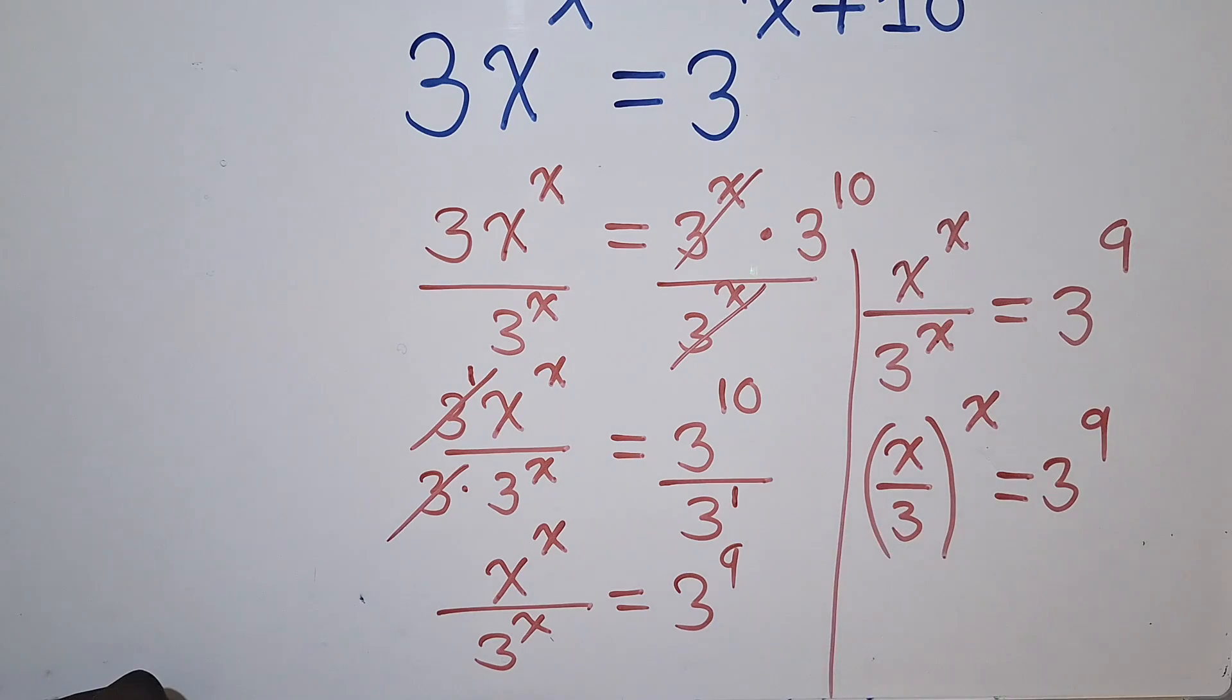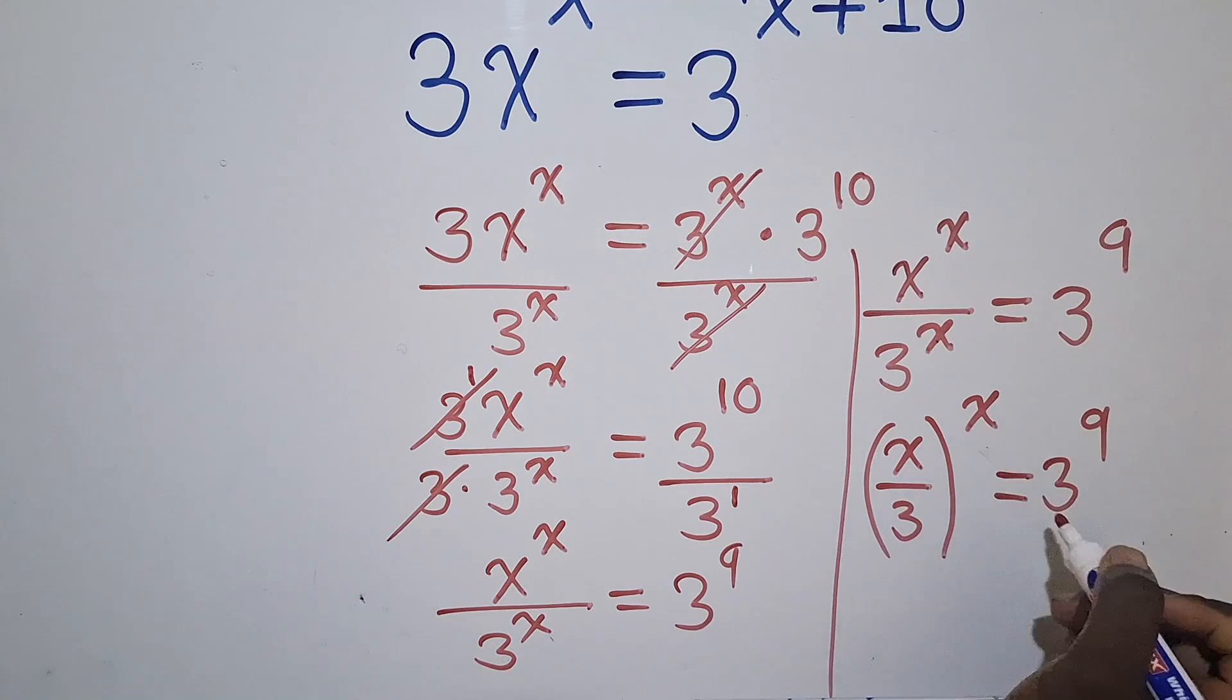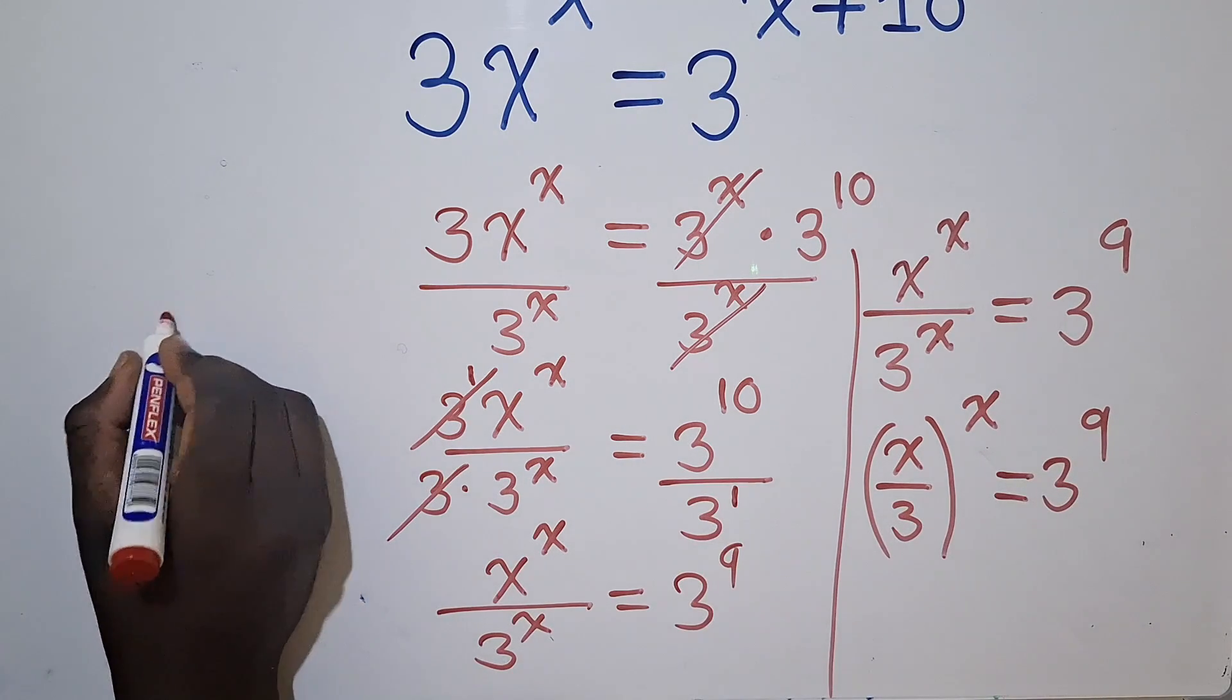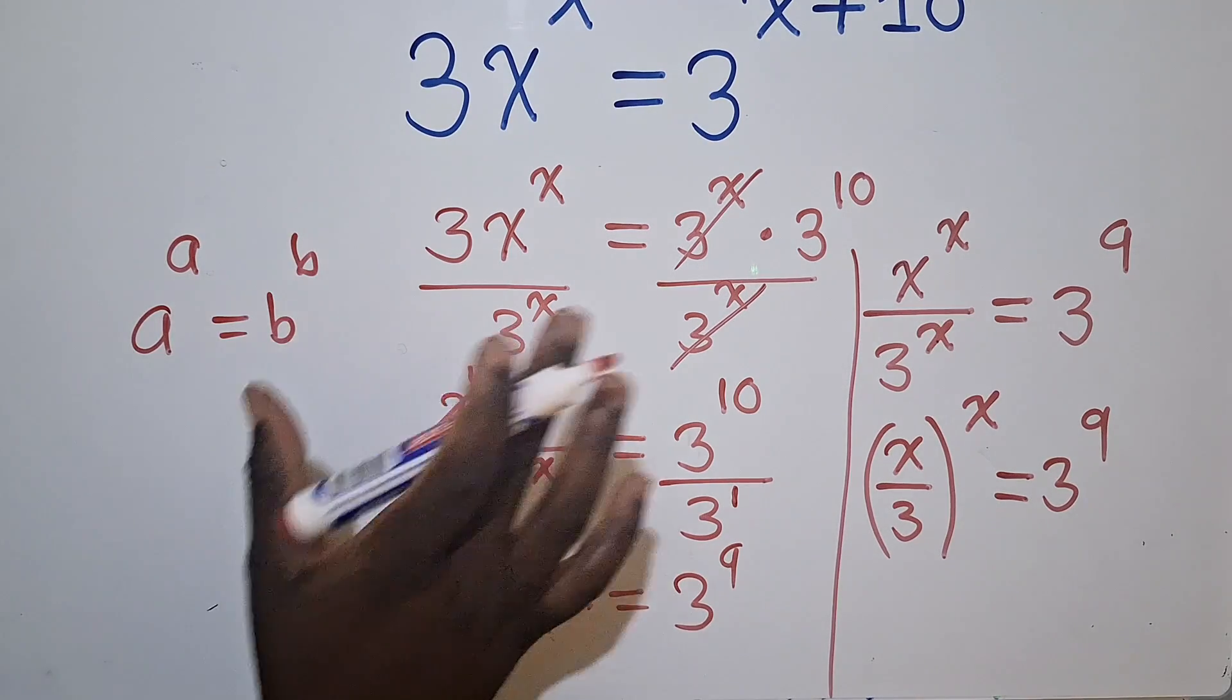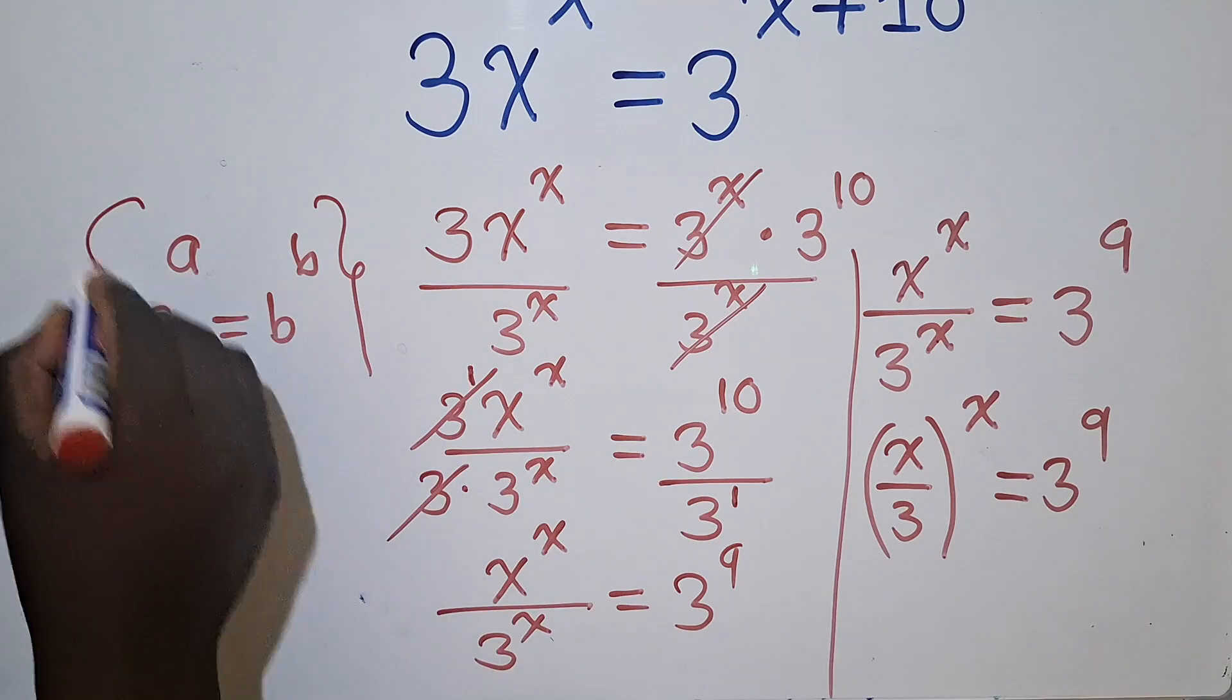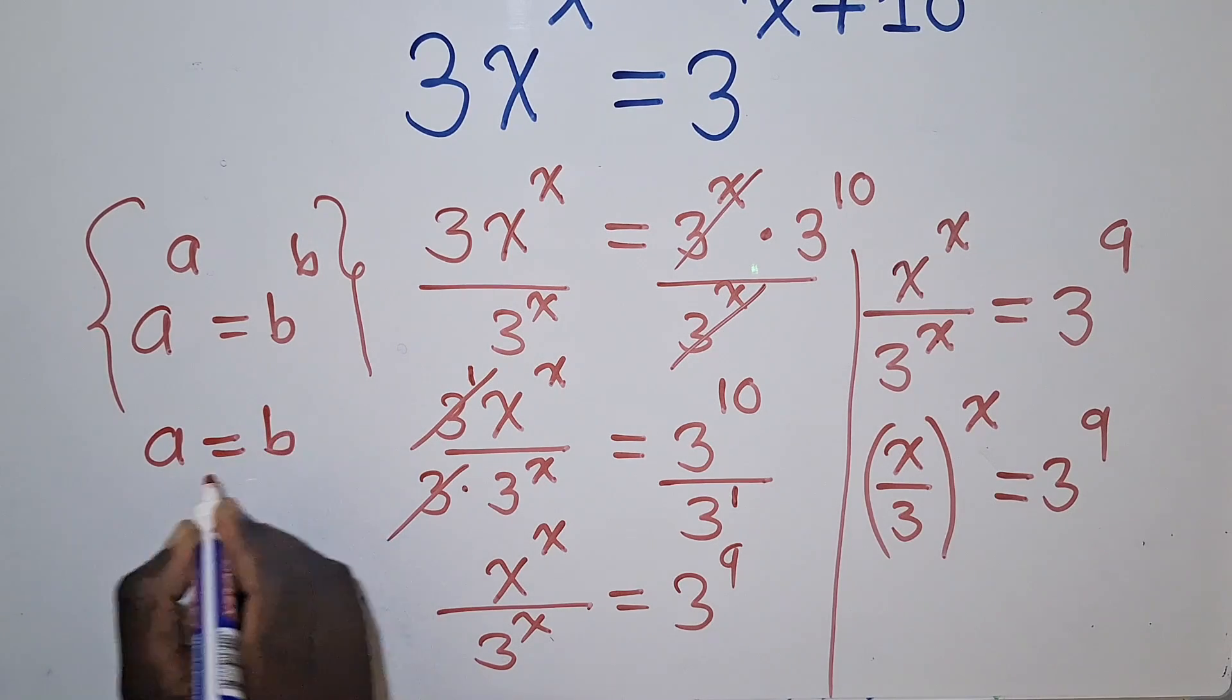So now from this stage, we want to balance the bases. I mean the base equal to the power, and also base equal to the power, and use this property which says that when you've got A power A is equal to B power B. So remember, for these exponential questions, this property is highly used.